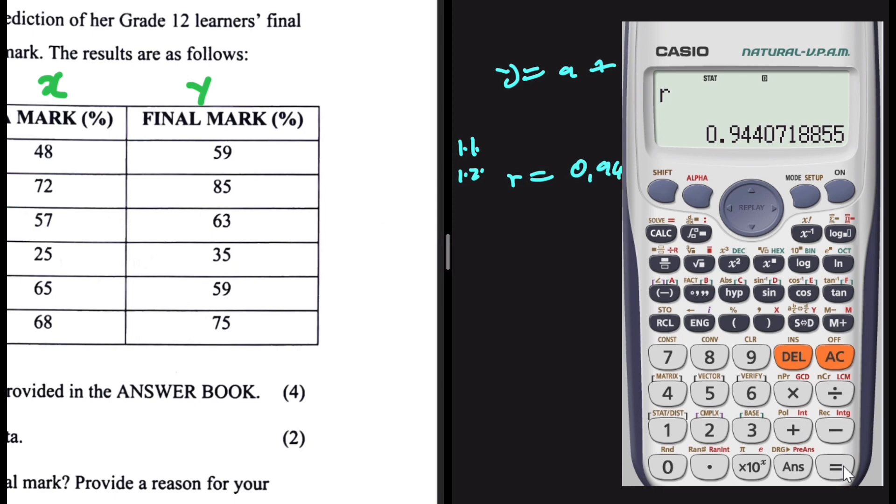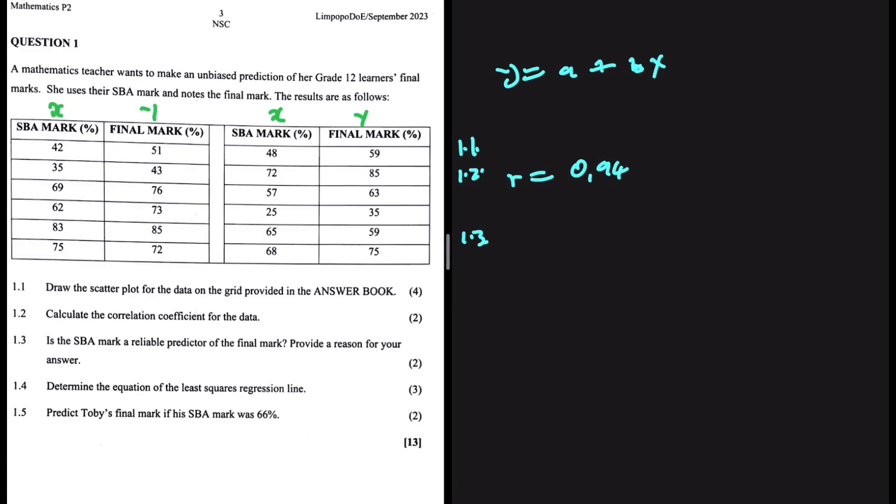And then now I can move to 1.3. The question is saying, is the SBA mark a reliable predictor of the final mark? Provide a reason for your answer. Obviously, it is a reliable predictor of the final mark because we can see that we have a very high correlation of 0.94.